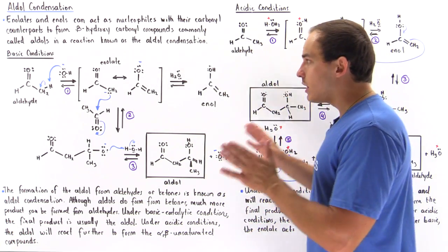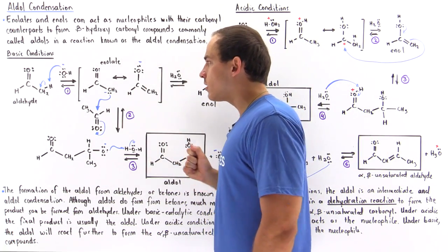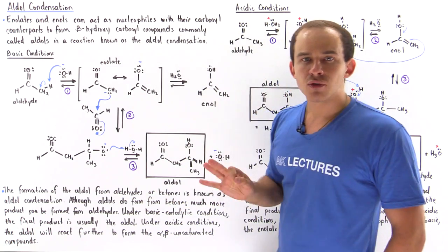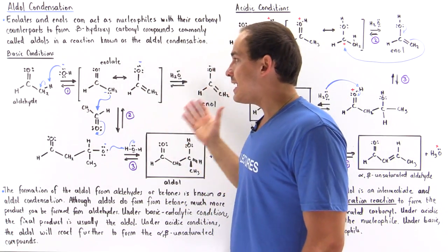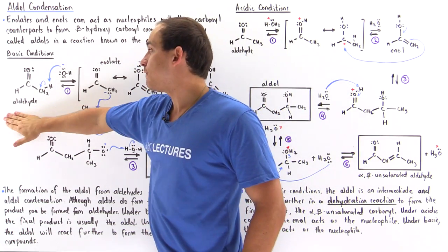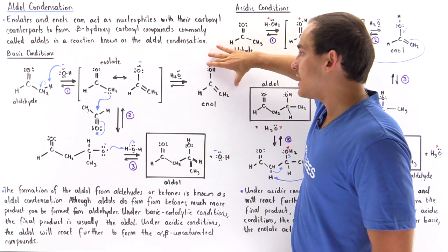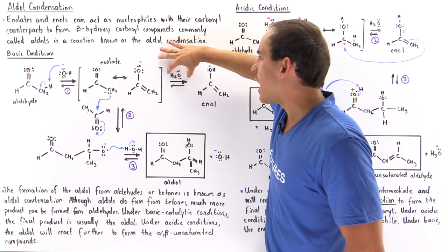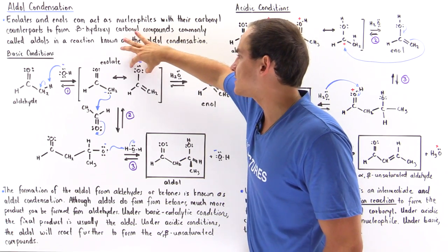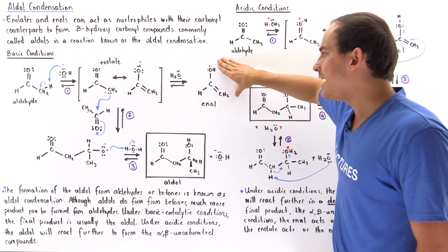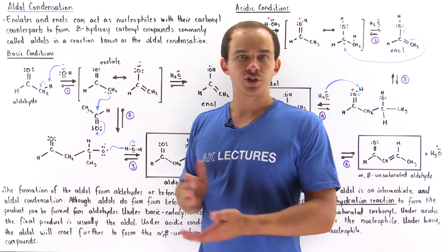Once the enolate intermediate is formed, three reaction pathways can follow. This enolate can either revert back and form our aldehyde, it can go on to form the enol — in which the water molecule formed in step one protonates the oxygen to form the enol — or the aldol condensation reaction takes place.